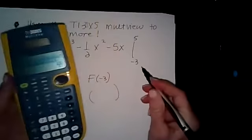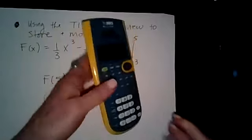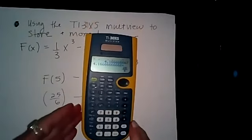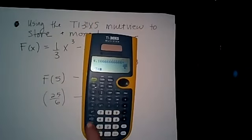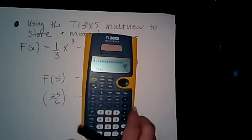And then I'm going to put negative 3 into my anti-derivative. So I'm going to do negative 3 store for X. There's my store. There's my X. And I enter.